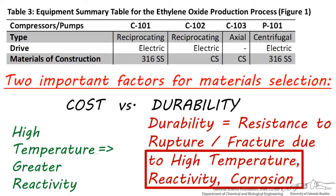Additionally, high temperature also increases the likelihood of a reaction between the process stream and the surface material. If the process stream is already potentially reactive, corrosive, oxidative, strongly acidic, or basic, this makes choosing a more durable material all the more important.